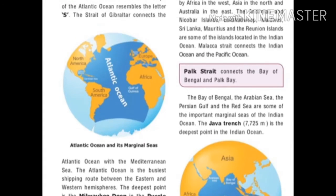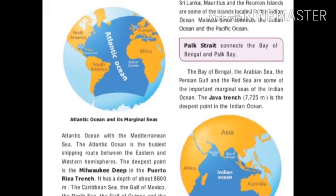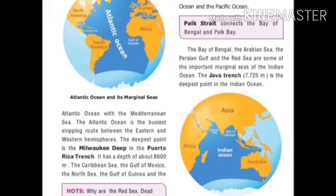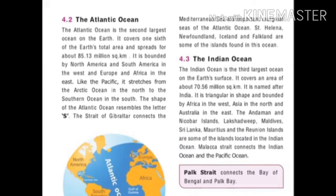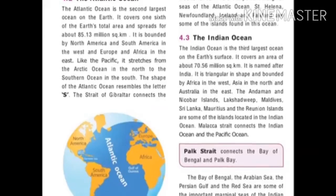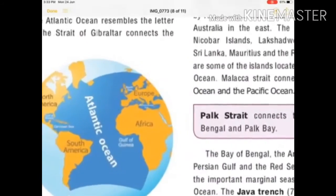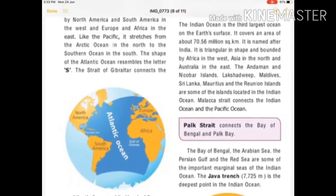The Atlantic Ocean is the busiest shipping route between the Eastern and Western Hemisphere. The deepest point is the Milwaukee Deep in the Puerto Rico Trench at about 8,600 meters. The Caribbean Sea, the Gulf of Mexico, the North Sea, the Gulf of Guinea and the Mediterranean Sea are some important marginal seas of the Atlantic Ocean.